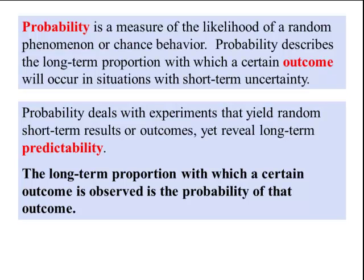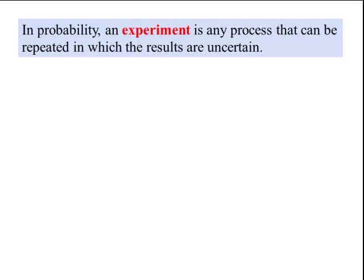The long-term proportion in which a certain outcome is observed is the probability of that outcome. In probability, an experiment is a process that can be repeated in which the results are uncertain.